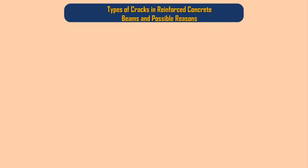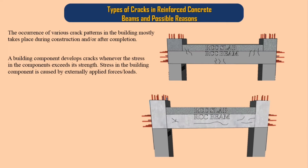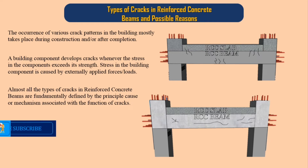The occurrence of various crack patterns in a building mostly takes place during construction and/or after completion. A building component develops cracks whenever the stress in the component exceeds its strength. Stress in the building component is caused by externally applied forces and loads. Almost all types of cracks in reinforced concrete beams are fundamentally defined by the principal cause or mechanism associated with the function of cracks.